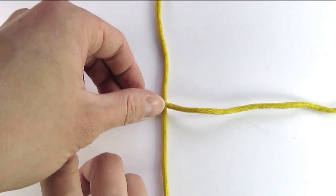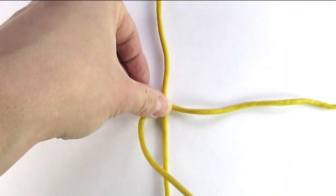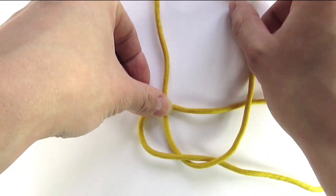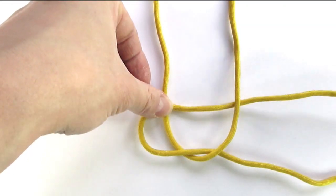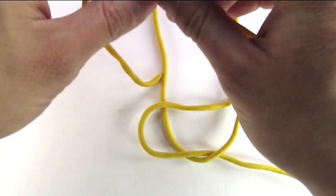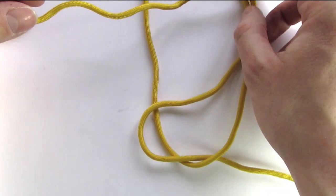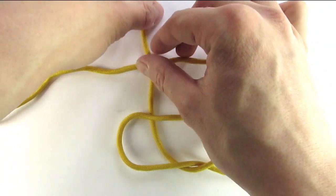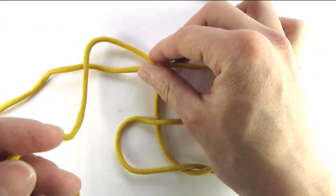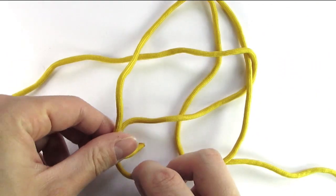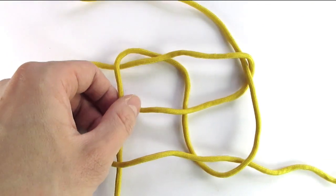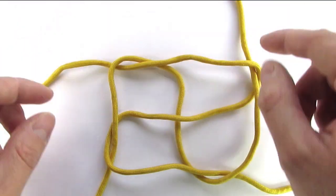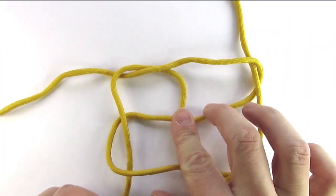So to start off we're going to tie a series of crown knots. I'm just going to demonstrate how the knot is tied here. Basically one cord goes over the next, like this. And then we tighten up the knot.